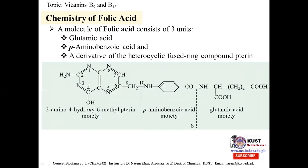Looking at the structure: glutamic acid is an amino acid with an amino group, an acid group, and two CH2 carbon groups — a dicarboxylic amino acid. It is linked via a peptide linkage to para-aminobenzoic acid, which is further linked to the moiety 2-amino-4-hydroxy-6-methyl fused ring, known as pterin. So the structure of folic acid is composed of two fused rings of pterin linked to para-aminobenzoic acid and glutamic acid.